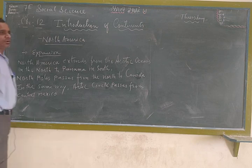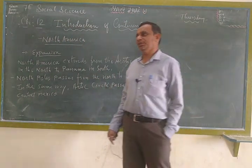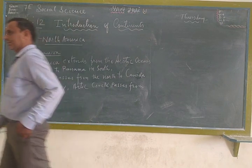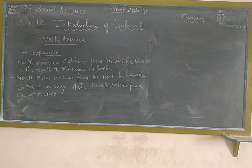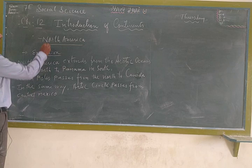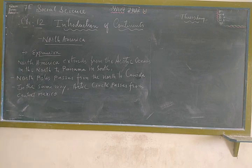First, I want to ask you a question. How many continents are there in the world? As we all know, there are seven continents in the world: South Asia, Europe, America, North America, South America, Australia, and Antarctica. So, this is what we discuss about North America.